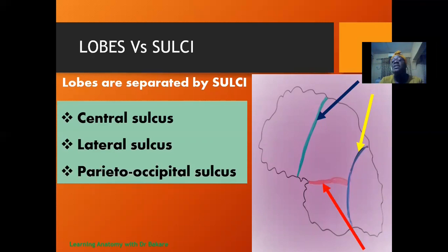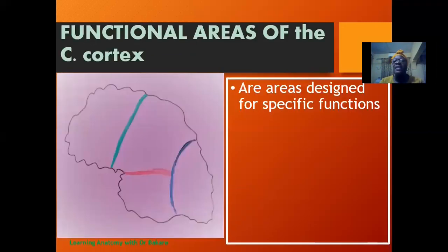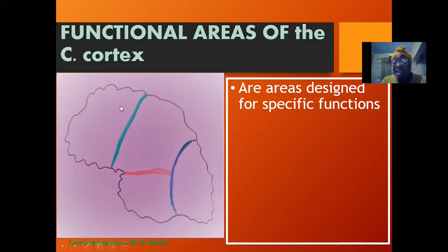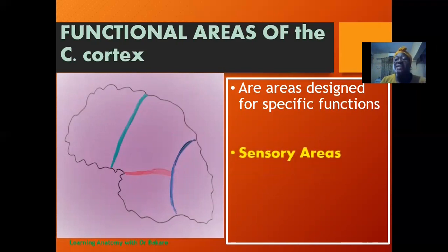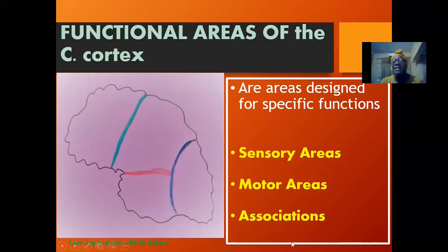Now going deeper to look at the functional areas of each region. The functional areas of the cerebral cortex are specific areas designed for specific functions — different regions are programmed for specific function. To summarize, we have three major functional areas: the sensory areas, the motor area, and the association area. This is the pattern by which we will highlight the functional areas of the different regions.